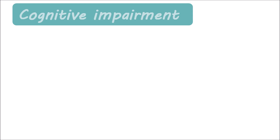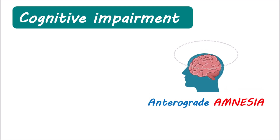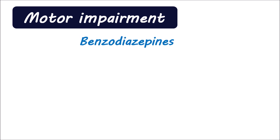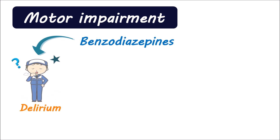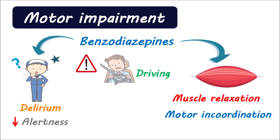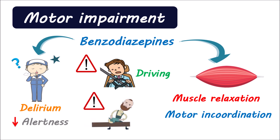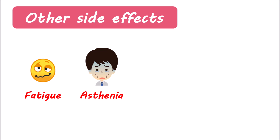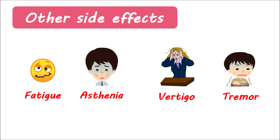The second important side effect is cognitive impairment. Benzos can produce anterograde amnesia, which impairs the memory of current events. This is especially noticeable in elderly people over the age of 60. Benzos can also induce confusion in elders and produce slurred speech. The third side effect is motor impairment. Benzodiazepines can depress the CNS, producing delirium — an altered mental state resulting in reduced alertness and response. They can also produce muscle relaxation and motor incoordination. This may impair daytime activities, so caution should be taken while driving or working with machinery. Other side effects include fatigue, tiredness, asthenia (a state of lack of energy), vertigo, and tremor.